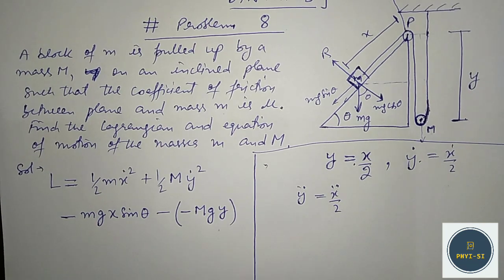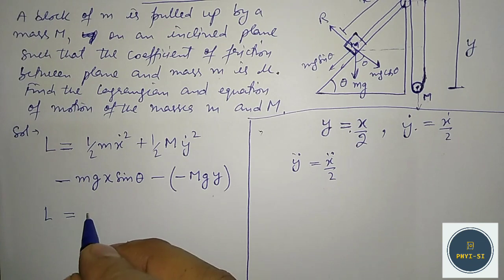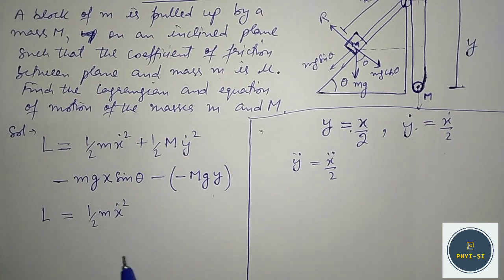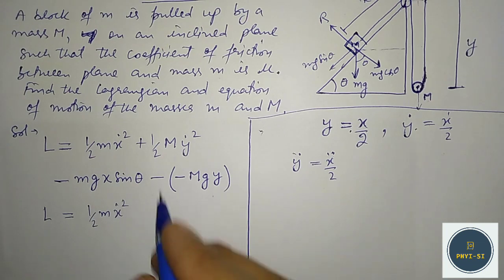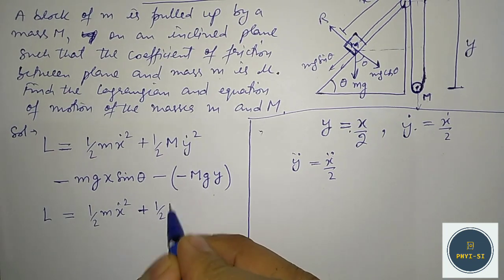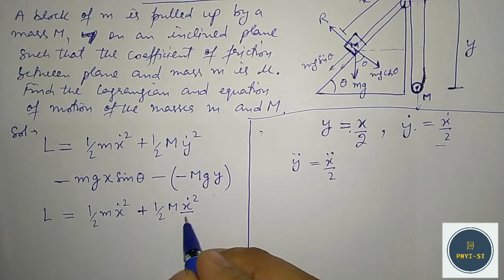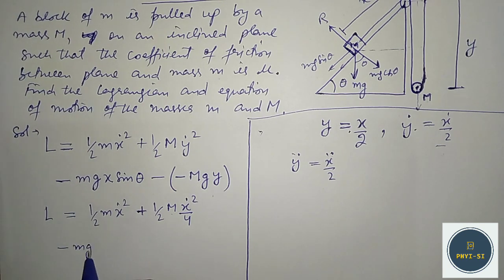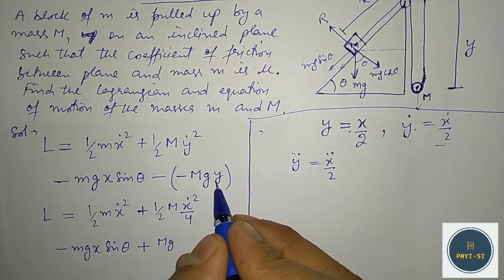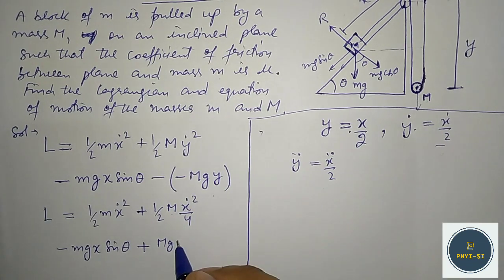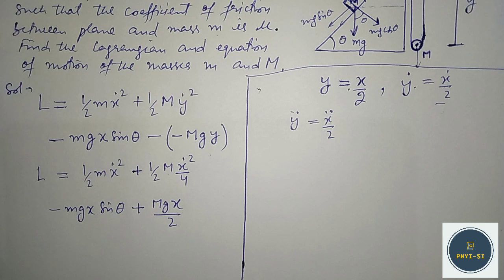Using the constraint relation, we can rewrite the Lagrangian entirely in terms of x. So L equals: half of m times x-dot squared, plus half of capital M times (x-dot squared / 4), minus mg x sin theta, plus Mg (x/2). This is the required Lagrangian for this mass system, and we can see we have only one coordinate, x.